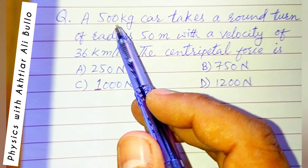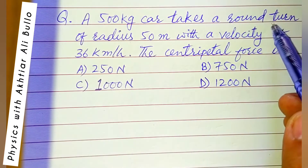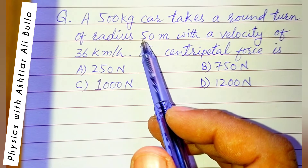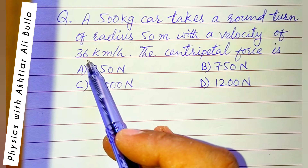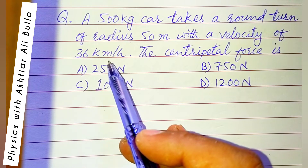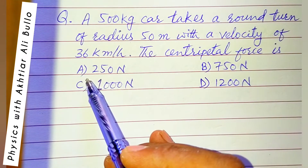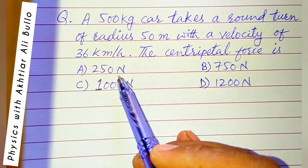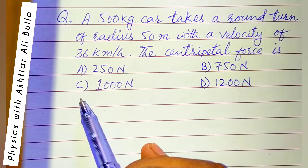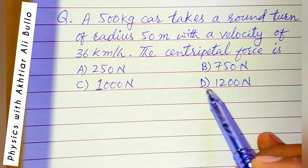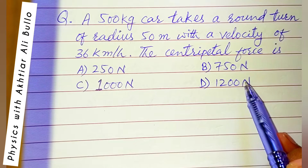The question: a 500 kg car takes a round turn of radius 50 meters with a velocity of 36 km per hour. The centripetal force is: A) 250 Newton, B) 750 Newton, C) 1000 Newton, D) 1200 Newton.